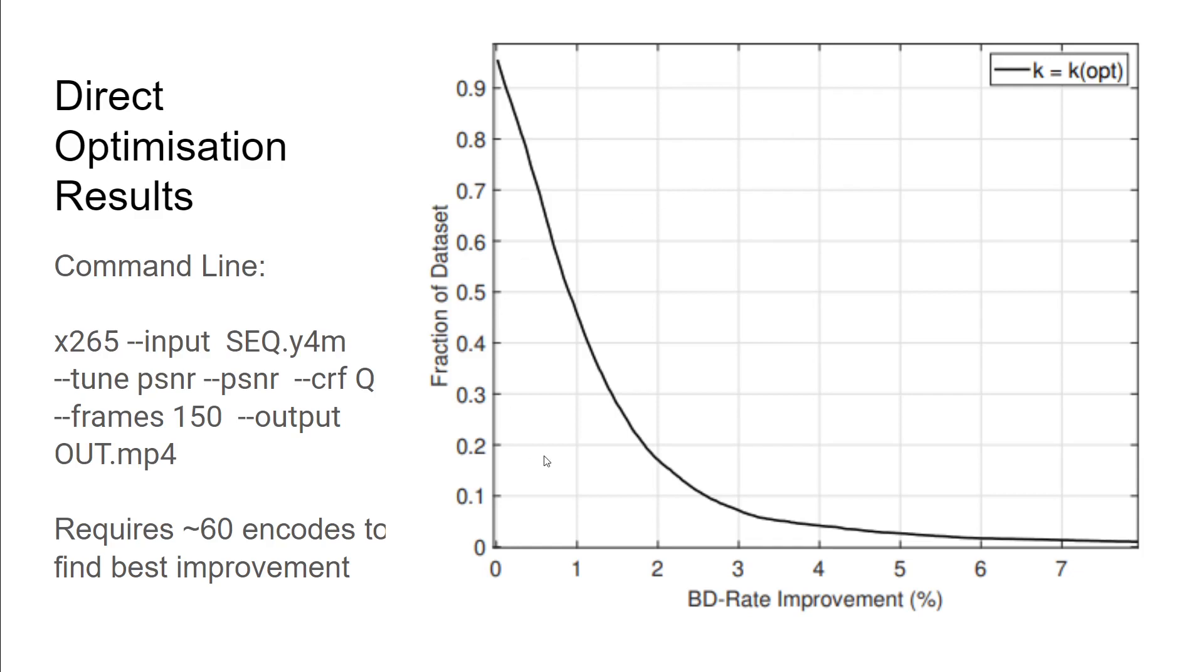Let's take a look at this graph. This is how we're representing our data going forward. On our y-axis, the fraction of our corpus which has a certain BD rate improvement or better. For example, 60% of the corpus has a 0.8% BD rate improvement or better. We could read it the other way: what percentage of our corpus has a 2% BD rate improvement or more? We could see that about 18-19% of our corpus had a 2% BD rate improvement or better.